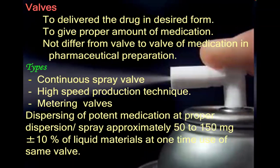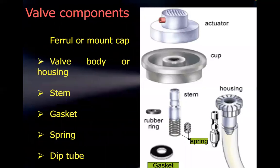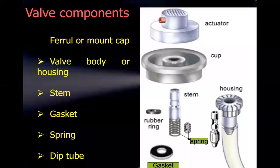Valves function to deliver the drug in the desired form and to give the proper amount of medication consistently. Types of valves include continuous spray valves, used in high-speed production, and metering valves, which disperse potent medication at proper dispersion — approximately 50 to 150 milligrams (±10%) of liquid material per actuation. Valve components are: ferrule or mounting cap, valve body or housing, stem, gasket, spring, and dip tube.